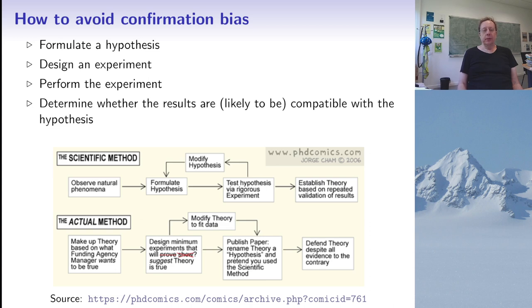Scientists have been aware of this problem for a long time and have developed methods to get around this confirmation bias. One method is to formulate a hypothesis, design an experiment that should confirm or infirm this hypothesis, perform the experiment, and look whether the results are compatible with the hypothesis. If not, you have to change your hypothesis. Here's another comic by Jorge Cham showing the scientific method versus what many people actually do.